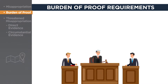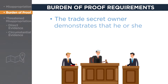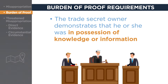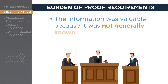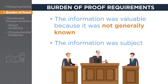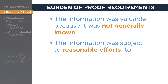The burden of proof in an actual, as opposed to a threatened, misappropriation case falls on the trade secret owner alleging misappropriation. This burden requires the trade secret owner to demonstrate that he or she was in possession of knowledge or information that was not generally known, was valuable because it was not generally known, and was subject to reasonable efforts to maintain its secrecy.